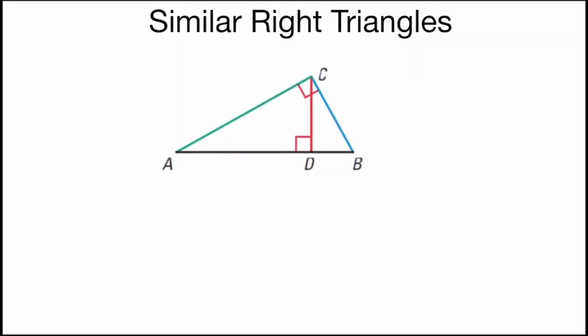This is a short introduction to similar right triangles. Similar right triangles are formed when you have a right triangle like this one and you drop an altitude from the right angle that will go right to the hypotenuse.